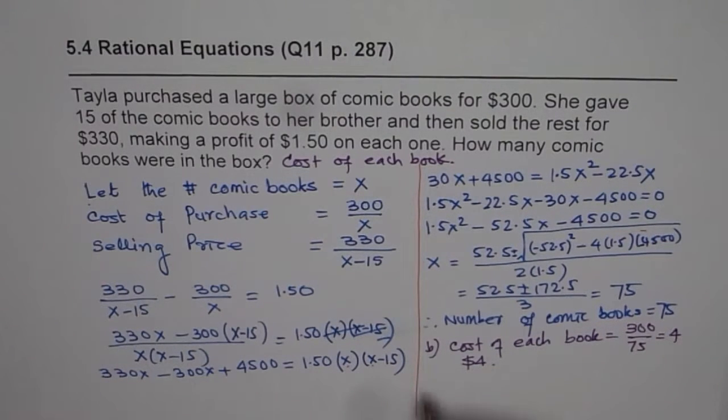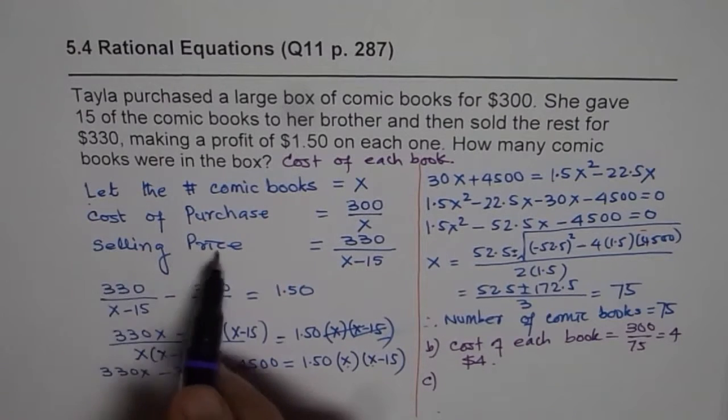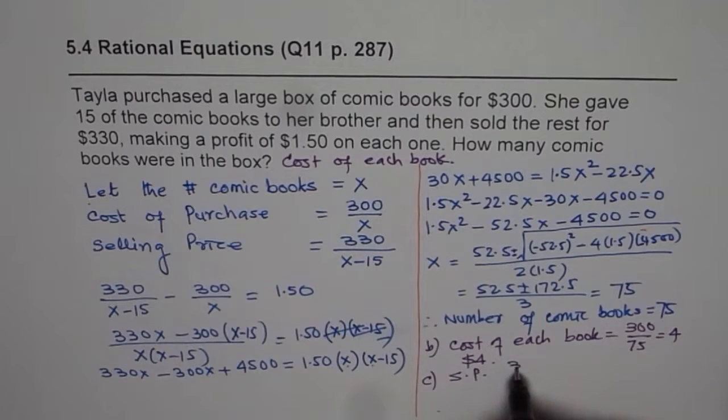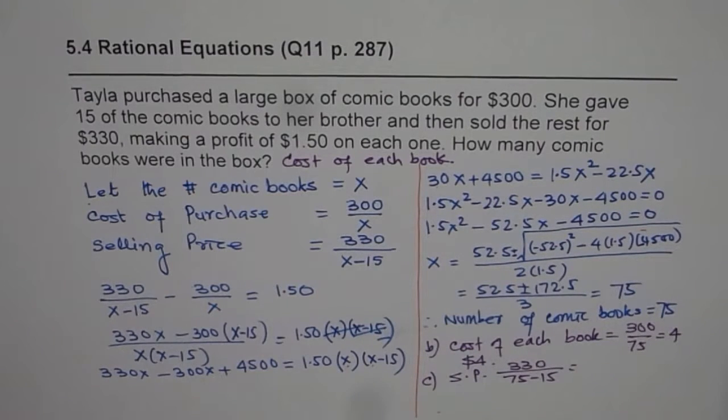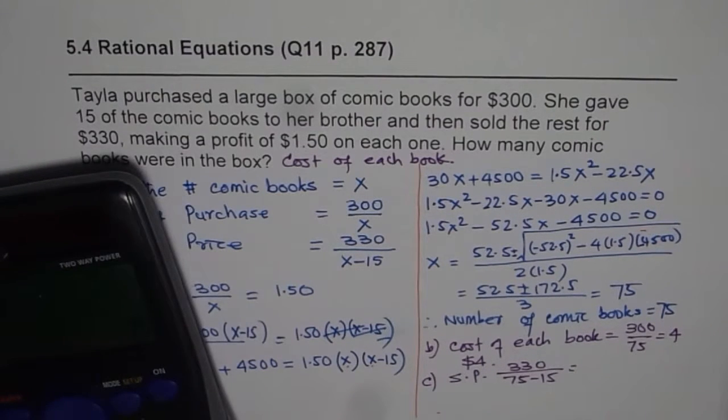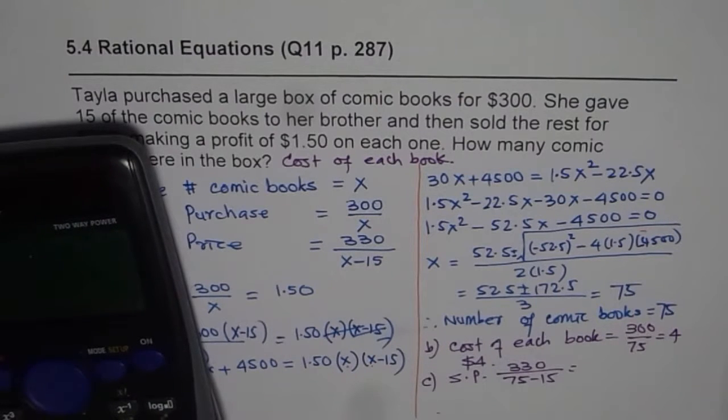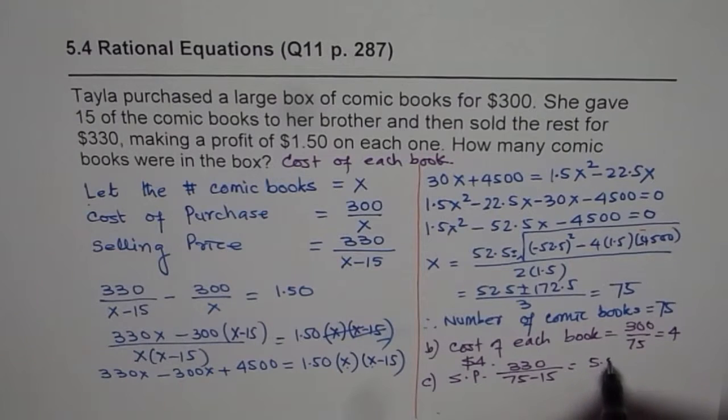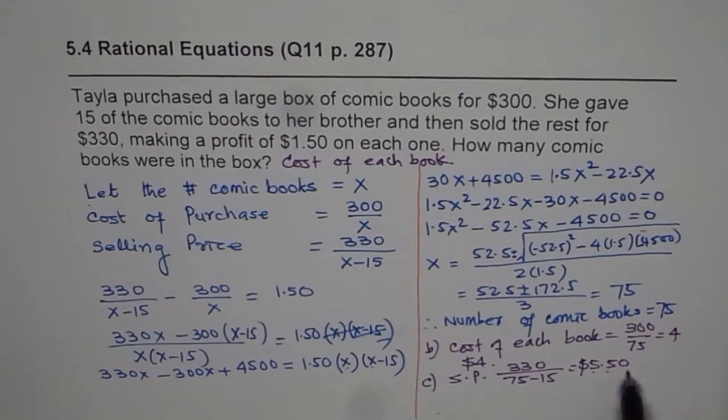Now the question could also be, what was the selling price of each book? You could find that also by dividing 330 by x minus 15, which is 60. And of course that should be much more. 330 divided by 60, 11 divided by 2 is 5.5. So $5.50 writing in dollars. You can see clearly, the difference is $1.50.